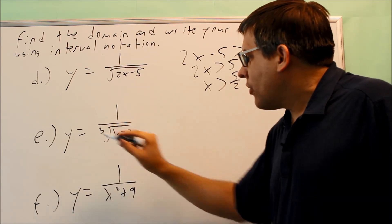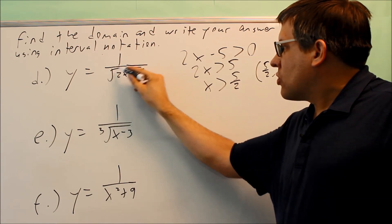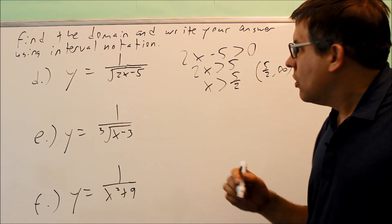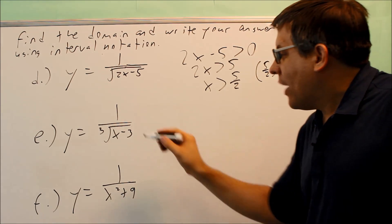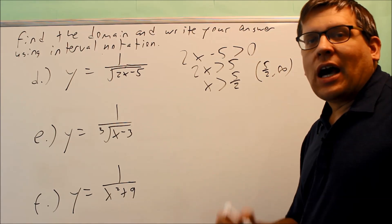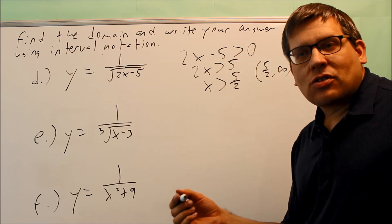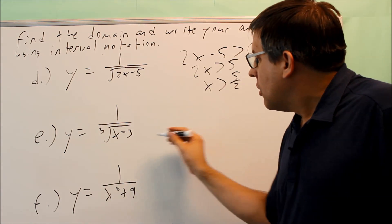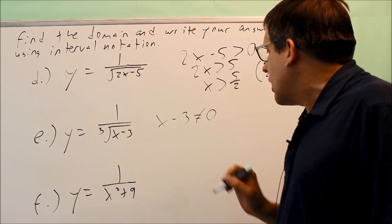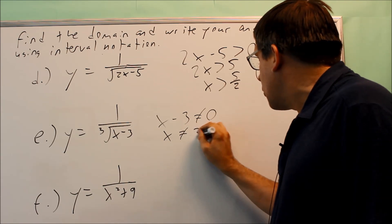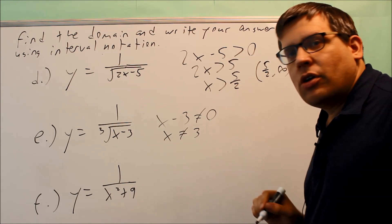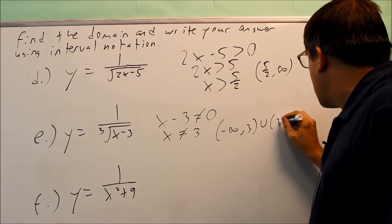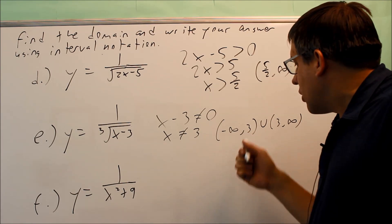Part E has a cube root. Anytime you have an even root — square root, 4th root, 6th root — you need to use an inequality. However, with an odd root, it's okay to take the root of a negative number. The cube root of negative 8 is negative 2, so negatives are allowed. But you still can't divide by 0, so we set x minus 3 not equal to 0, giving x is not equal to 3. The answer is negative infinity to 3, union 3 to infinity.